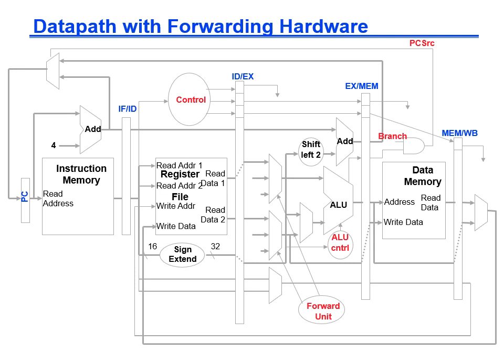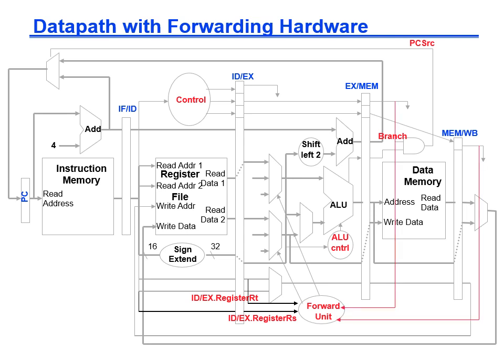Here we connect the forwarding unit to the datapath. For simplicity, we omitted the control line inputs connecting EX/MEM RegWrite and MEM/WB RegWrite to the forwarding unit, but in practice you also need to connect those control signals so that the forwarding unit knows whether the instructions in the writeback and memory stages will actually write to the register file.